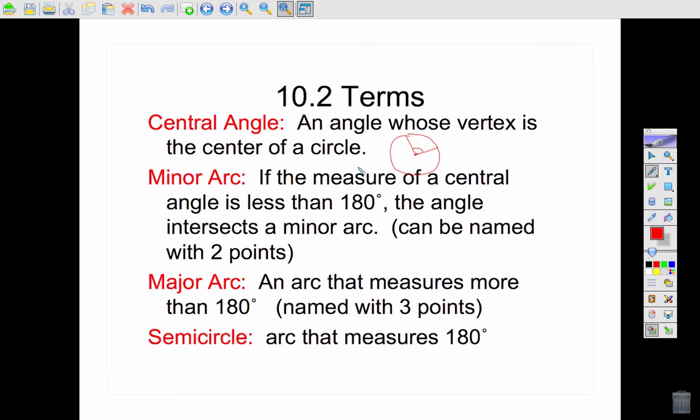If the measure of a central angle is less than 180 degrees, it intersects a minor arc. So if I have a center here and an angle, the minor arc is right here, as long as it's less than 180 degrees. If we call this A and this B, we could name that arc AB and put a little arc symbol above it.